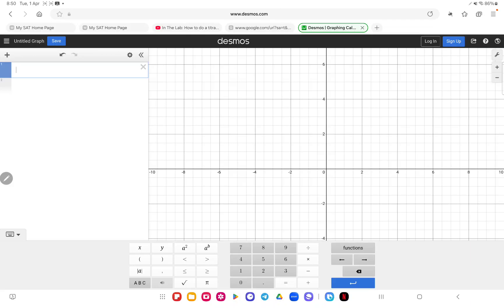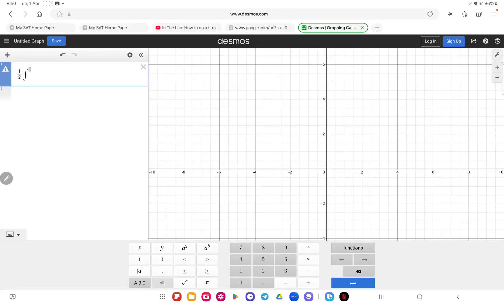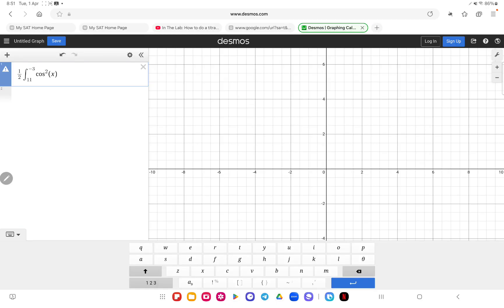So now you have to go to Desmos, and here you have to type 1 divided by 2. And now you want to do integration. So you're going to have to go to functions. You have to scroll all the way to integration from 11 to negative 3. Now you have to put the function cosine, you must square it, don't forget that. And then you're going to put x, close the bracket, dx. So you're going to have to go to ABC, you have to type in d, and you have to type in x.